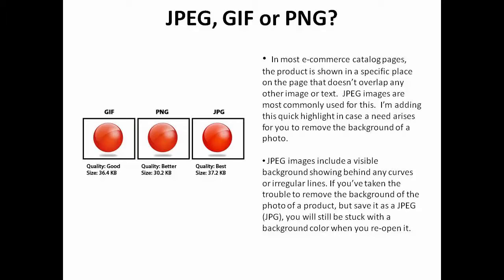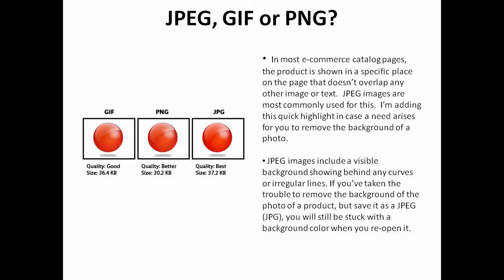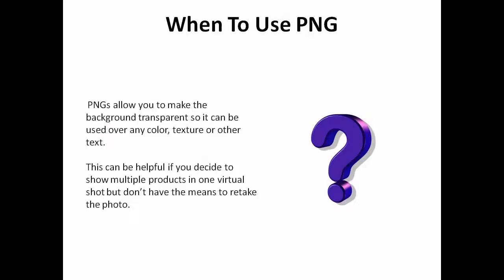JPEG, GIF, or PNG? In most e-commerce catalog pages, the product is shown in a specific place on the page that doesn't overlap with any other image or text, and JPEG images are most commonly used for this. However, JPEG images include a visible background behind any curves or irregular lines. If you've taken the trouble to remove the background of a product photo but save it as a JPEG, you'll be stuck with the background color when you reopen it. PNGs allow you to make the background transparent so it can be used over any color, texture, or other text — helpful if you want to show multiple products in one virtual shot but don't have the means to retake the photo.